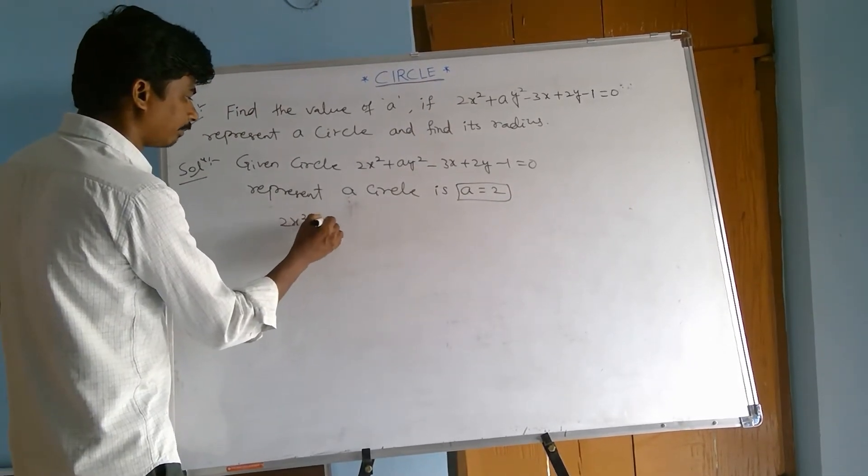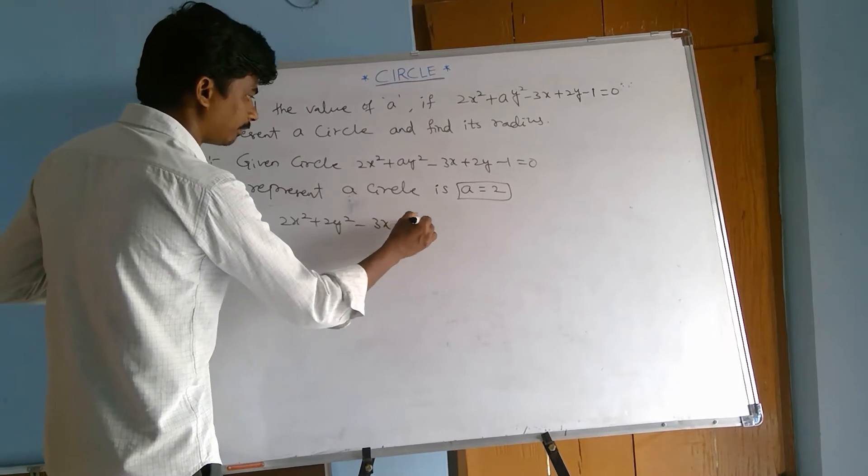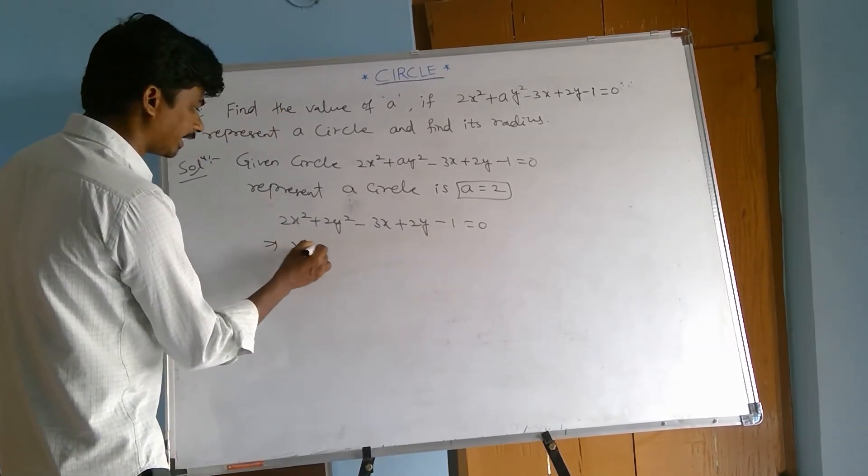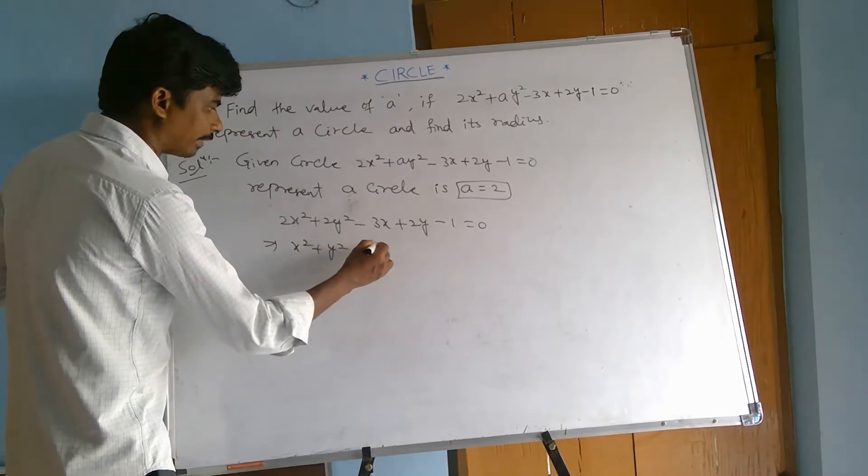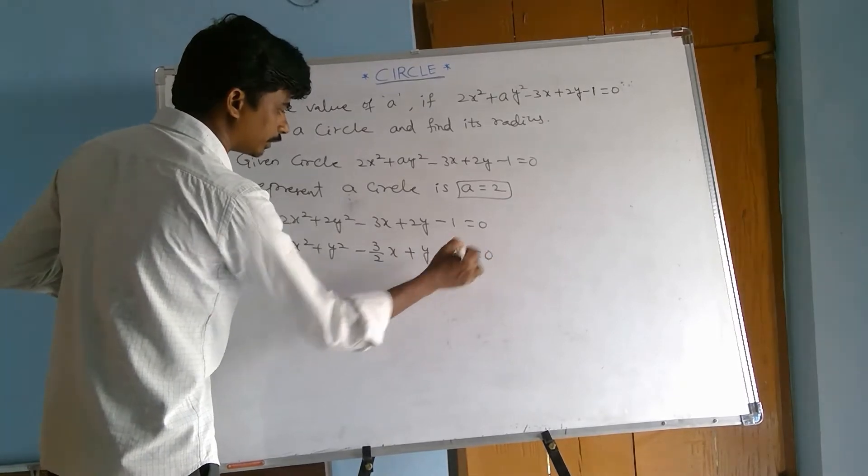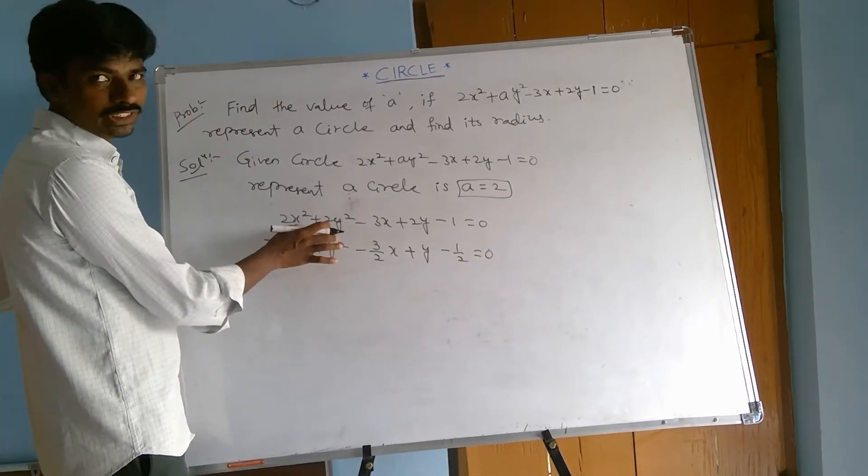So 2x squared plus 2y squared minus 3x plus 2y minus 1 equal to 0. That implies x square plus y square minus 3 by 2 x plus y minus 1 by 2 equal to 0. Now divide by 2.